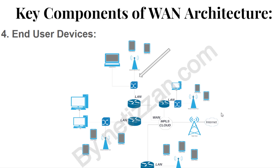The next component is End User Devices. It could be a laptop, a mobile phone, a printer — anything making use of the internet. Usually, a switch is used to provide more ports so that more end user devices can be connected. As you can see here, this laptop is connected directly to this switch, and this wireless access point is also connected directly to this switch.